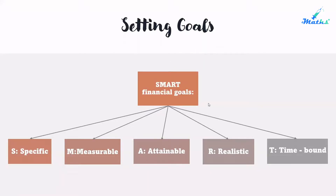Next is the SMART financial goal. We use the SMART approach to achieve our goal. S is Specific — what exactly are you trying to achieve? M is Measurable — how will you know when you have achieved it? A is Attainable — is it possible to achieve it, or are you able to take action to achieve the goal? R is Realistic — is it realistic that you will achieve it given your current mindset, motivation, time, skill, or ability? And T is Time-bound — when do you want to achieve your goal?